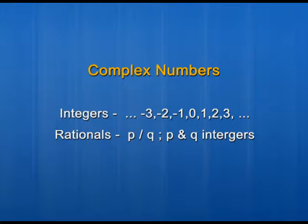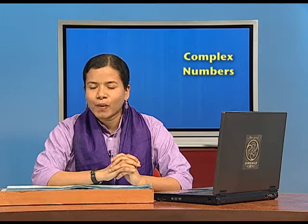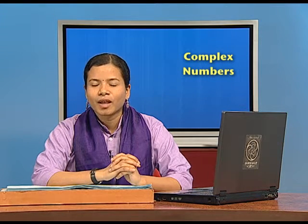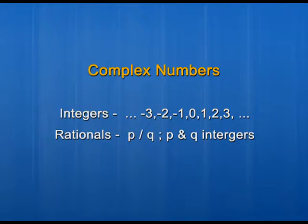Integers, rationals, and irrationals all together are called real numbers. Integers include all positive numbers like 1, 2, 3 up to infinity, with 0 and negative numbers like minus 1, minus 2, minus 3 up to minus infinity. Rational numbers are of the form p by q where p and q are integers. Numbers which are not rationals are called irrationals.